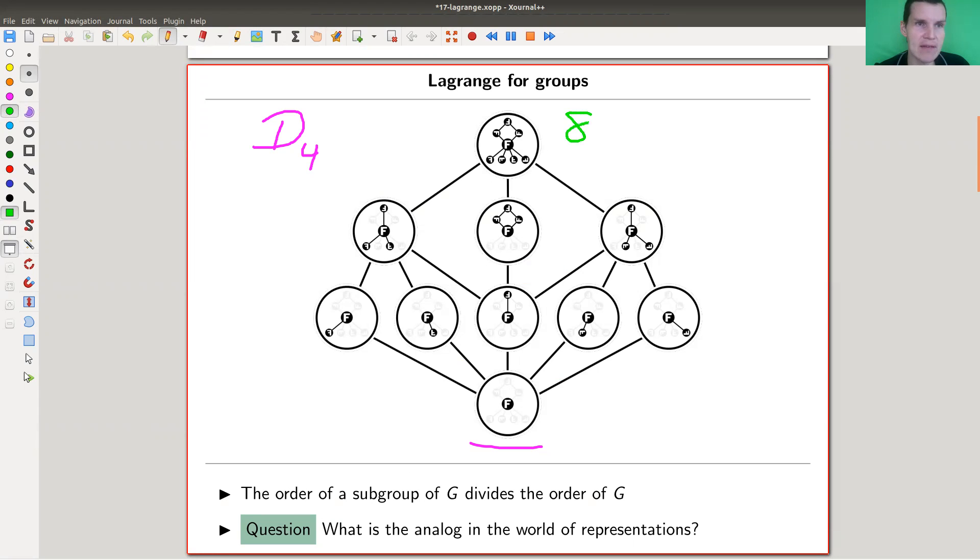So here this is eight. All of these are four, these are divisors of the order of the group. All of these are two, all of them divide, and of course one divides eight as well. The question is, what is the analog of this in the world of representations, in our beloved world?